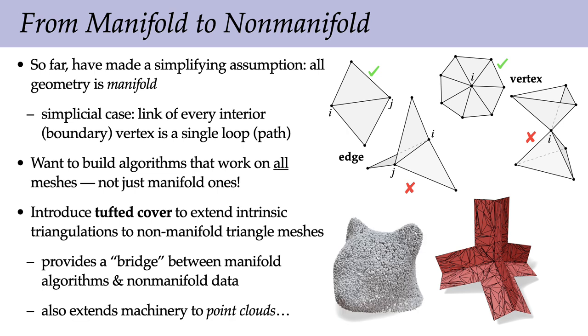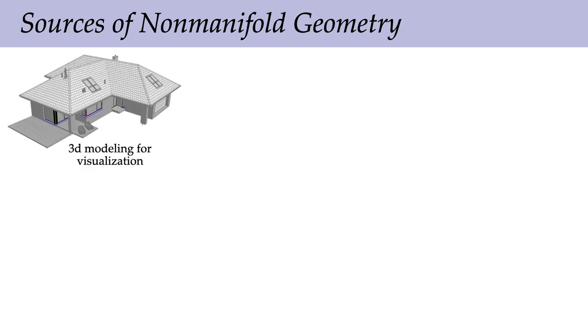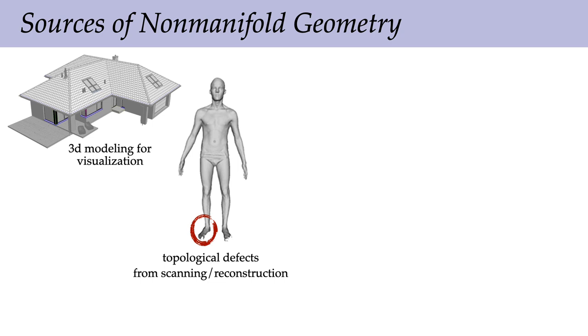We're also going to be able to extend algorithms for meshes to point clouds. One reasonable question is: why is our data non-manifold in the first place? One source is models built for visualization purposes, where there's really no need for them to be manifold, yet somewhere down the line it might still be useful to do analysis or simulation. Another is that geometric algorithms themselves may produce non-manifold output — scanning and reconstruction algorithms can easily have little topological defects that don't reflect the actual shape.